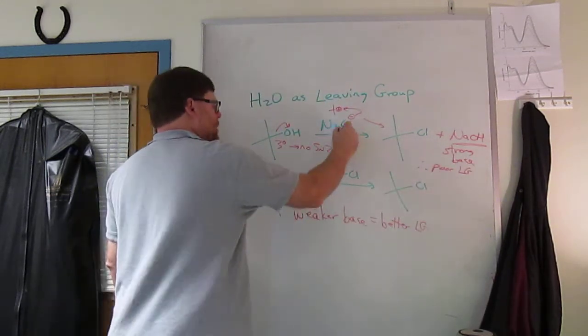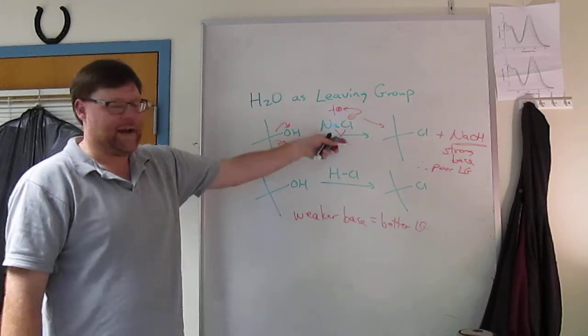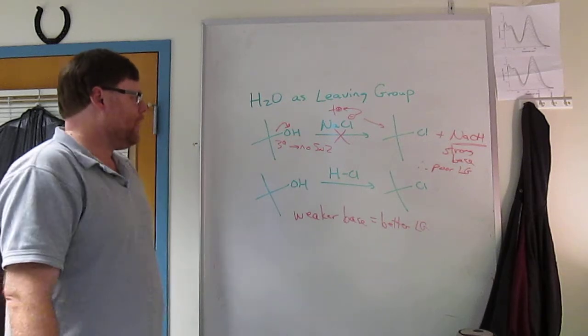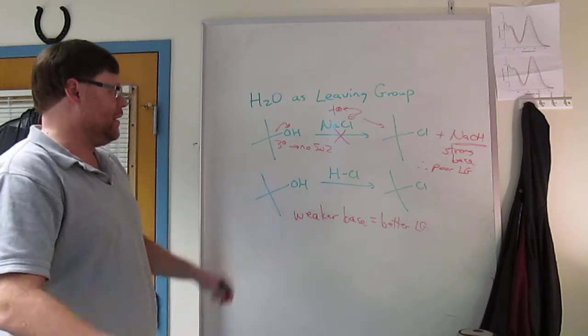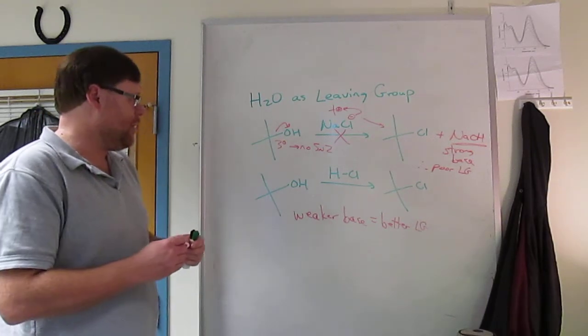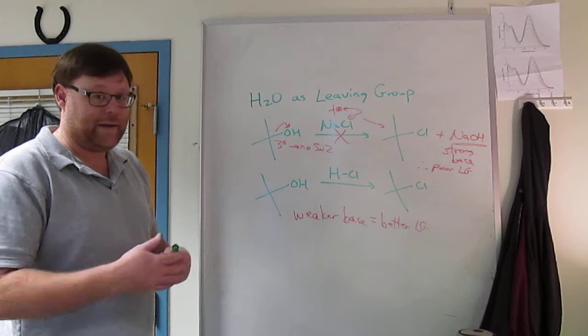So this top reaction, if you see an X over the reaction arrow, this means the reaction doesn't go forward. So basically this reaction doesn't happen. If you take T-butanol and you start in a solution of sodium chloride, nothing happens.